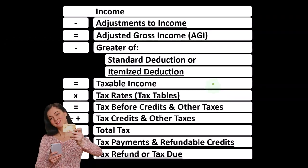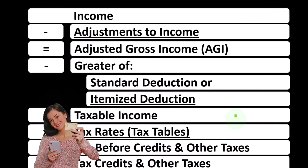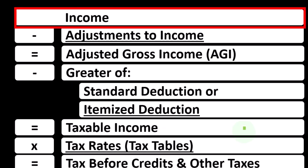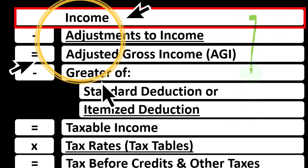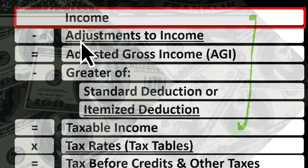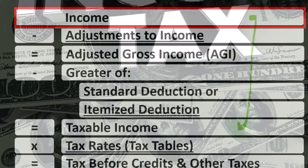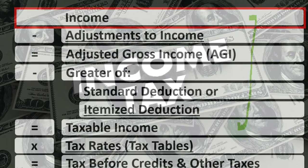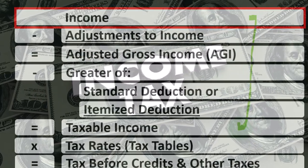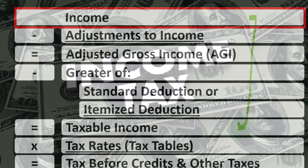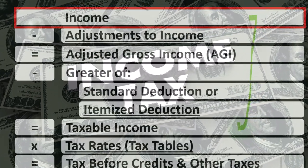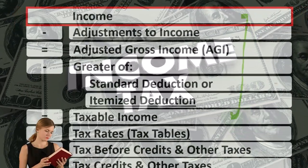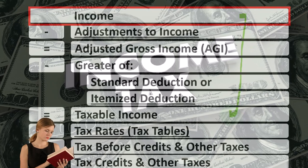Looking at the Income Tax Formula, we're focused on Line 1, Income. Remember, the first half of the Income Tax Formula is, in essence, an Income Statement — just an outline, just a scaffolding with other forms and schedules flowing into these line items.